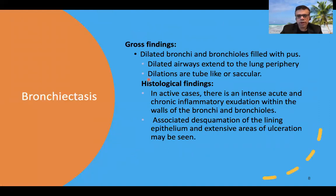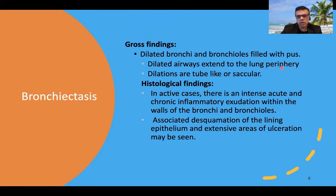The gross findings in bronchiectasis include dilated bronchi and bronchioles filled with pus. Dilated airways extending to the lung periphery are seen — normally, dilated airways do not extend beyond two to three centimeters from the pleural surface, but in bronchiectasis they extend to the lung periphery. The dilatations are tube-like or saccular.